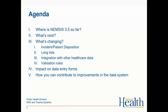The agenda for today: we're going to talk about what has happened with the development of NEMSIS 3.5 so far, and then what the next steps are, and precisely what is changing. Some of the major data elements that will be shifting include patient disposition, incident and patient dispositions, the lists in the state data set, integration with other healthcare data, specifically the implementation of the universally unique identifier, and changes to validation rules. We'll also cover the impact on your data entry forms, and how you can contribute and participate in the implementation process.